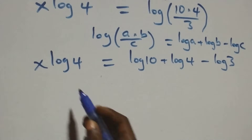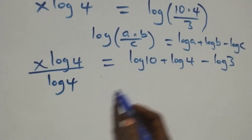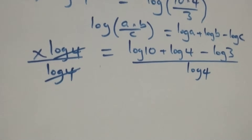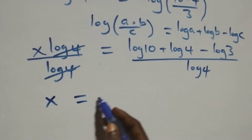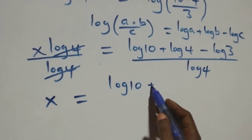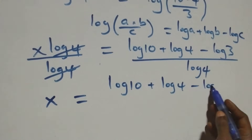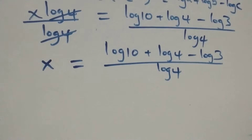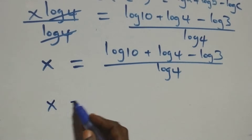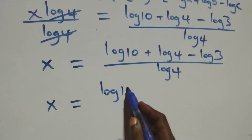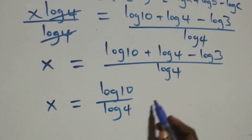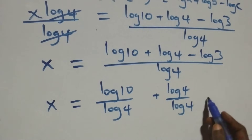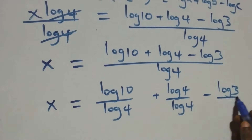Next step: we divide both sides by log 4. The log 4 terms cancel each other, and we have x equals log 10 plus log 4 minus log 3, all over log 4. We separate this into fractions: x equals log 10 over log 4, plus log 4 over log 4, minus log 3 over log 4.